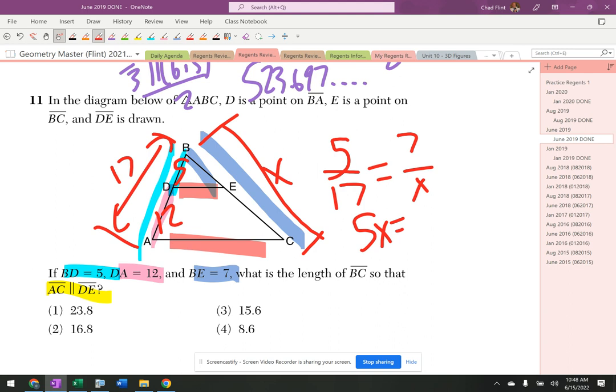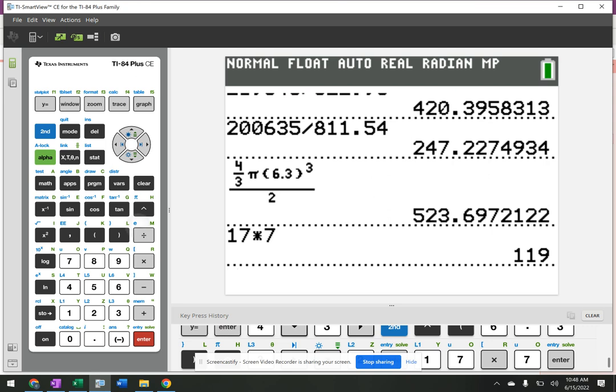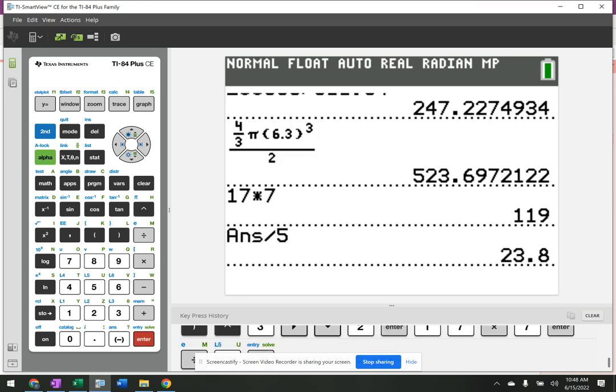So it's five X equals... No, not 139. 119. Oh, I've started y'all again. Divide that by five. Let's double check. The 17 times seven is 119. Divide by five. 23.8.